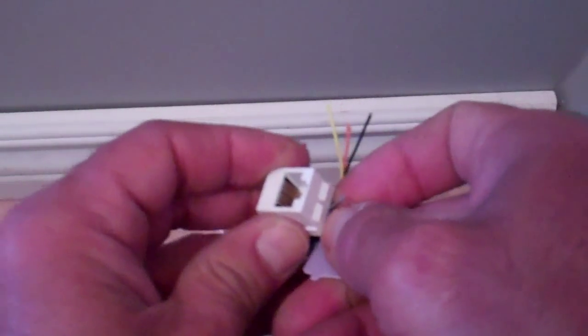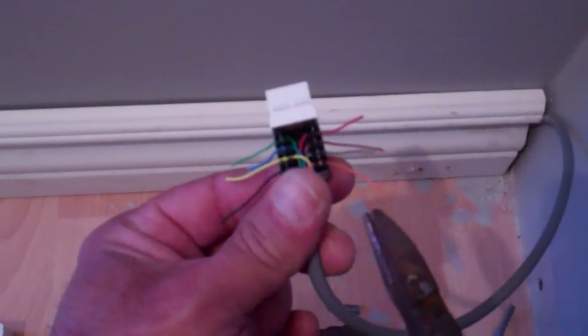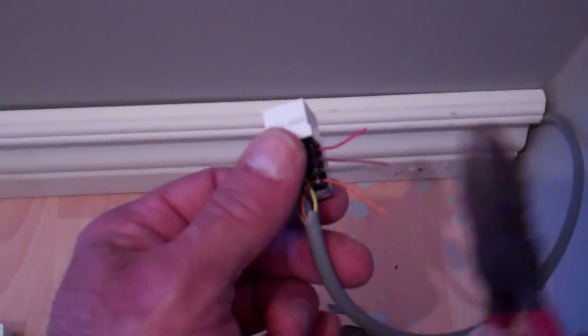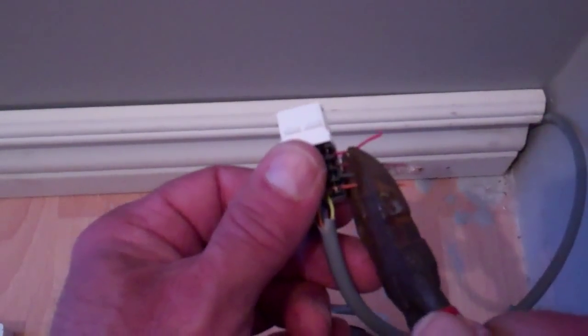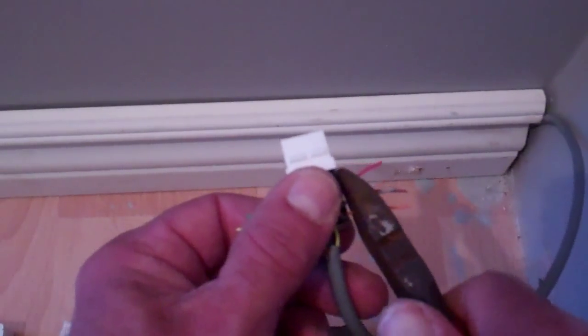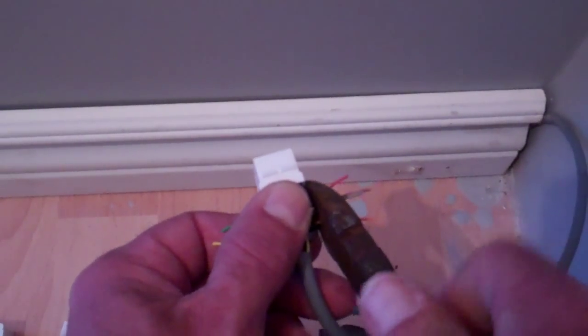Get them all into place like that, and then we're going to cut the ends off. So all the wires are in place. The big thing here is that whatever wiring scheme you use on this end, use the same on the other end.